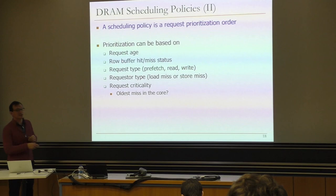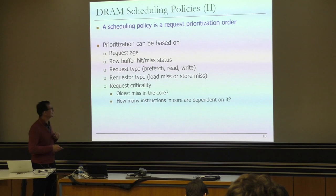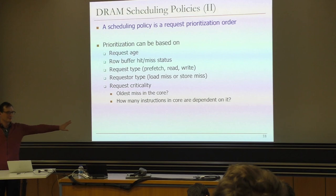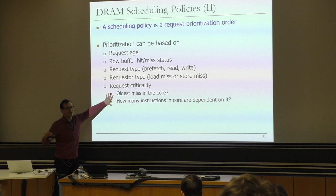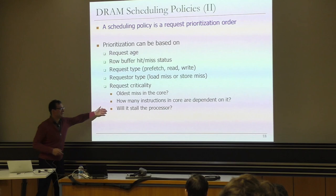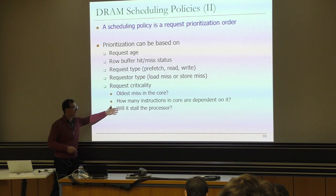For example, is it the oldest miss in the core? The core can generate, say, five misses — is this the oldest one? How many instructions in the core are dependent on this request? That could be another definition of criticality. If you finish this request early, you'll enable 100 different instructions to execute, because all of those may be waiting for a single piece of data. People have tried to figure out definitions of criticality quite a bit. Many cache misses whose latencies are not overlapped are actually critical from the perspective of the core.